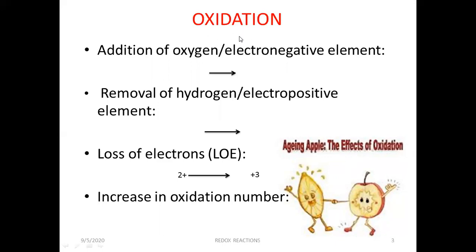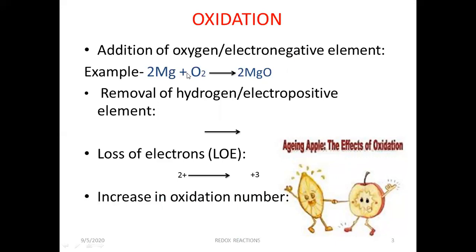The definition of the oxidation process involves four aspects listed below. The first is addition of oxygen or an electronegative element. For example, magnesium when added to oxygen gas gives us magnesium oxide. Here, oxygen is added to magnesium, so this process is known as oxidation, forming magnesium oxide.